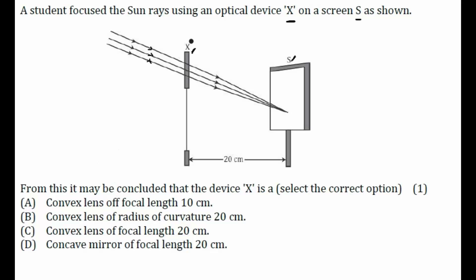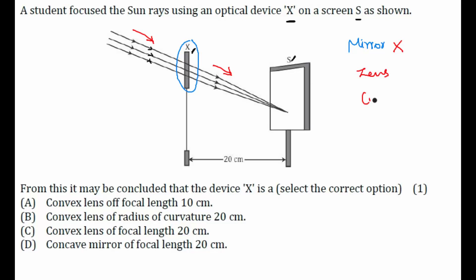From the figure, we can clearly see that rays are passing through the device. If it were a mirror, there would be no chance of rays passing through it — so it's not a mirror. Now, parallel rays coming from one side are getting focused on the other side, which is a property of a convex lens.